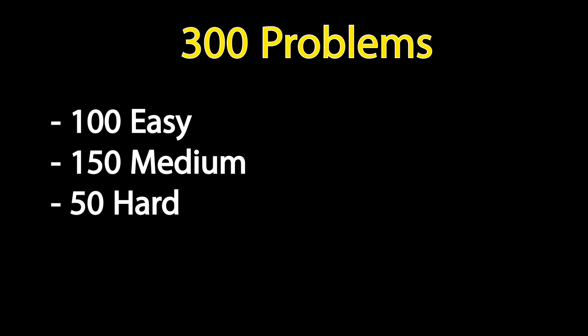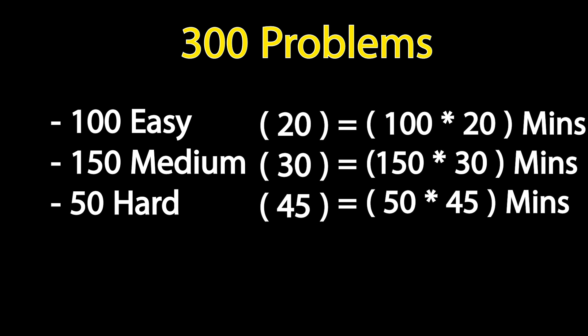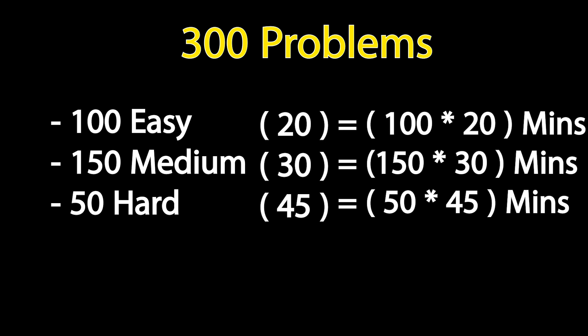In the best case scenario, let's assume that you can solve an easy problem in 20 minutes, a medium problem in 30 minutes, and a hard problem in 45 minutes. So the total time invested to solve these 300 problems would be 100 × 20 + 150 × 30 + 50 × 45, which comes to roughly 8,750 minutes, similar to 145 hours. On average, let's consider the number as 200 hours.